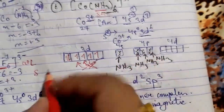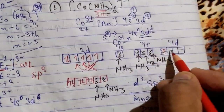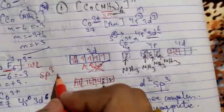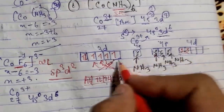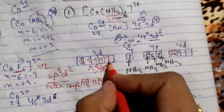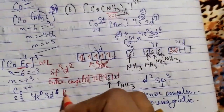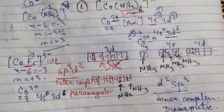Filling the 3d orbitals for CoF₆³⁻: 3d orbitals are filled, and because F is a weak ligand, we extend into 4d and 5d orbitals for outer orbital hybridization.